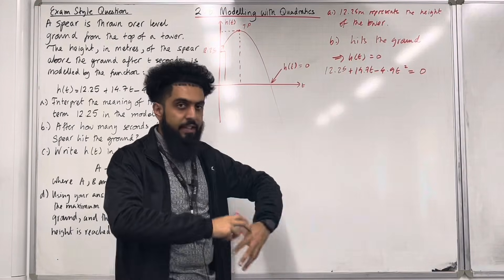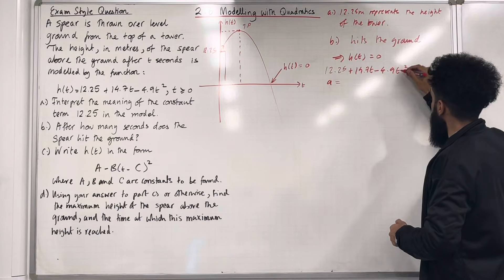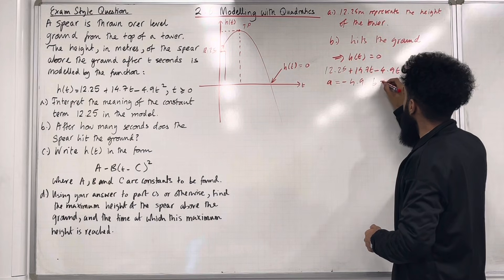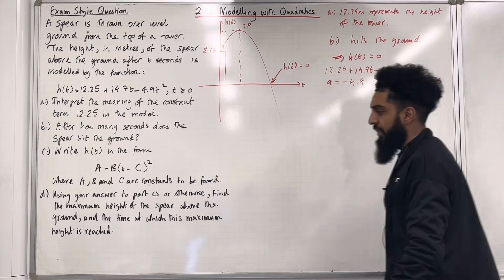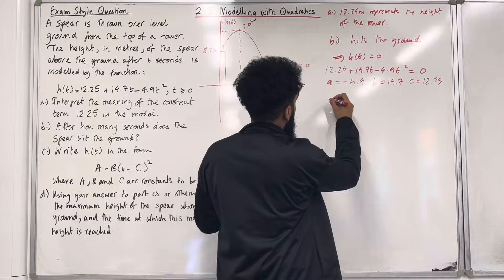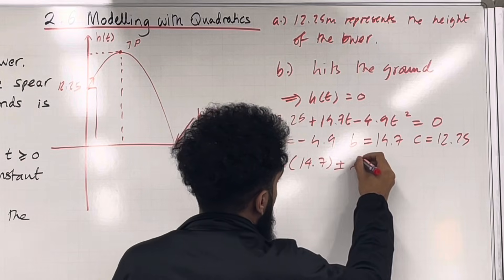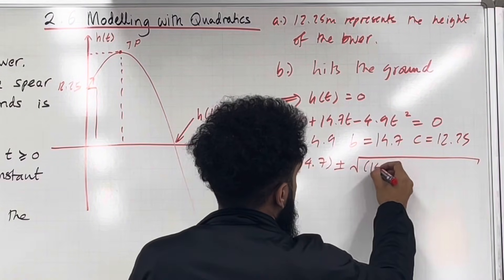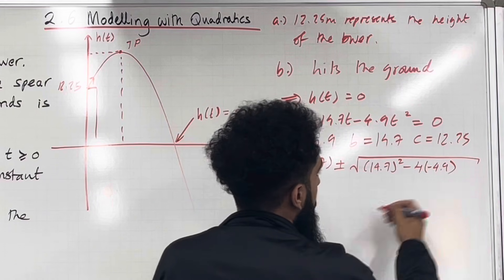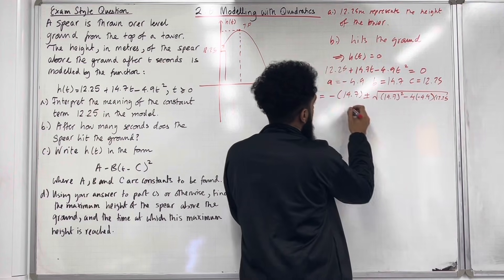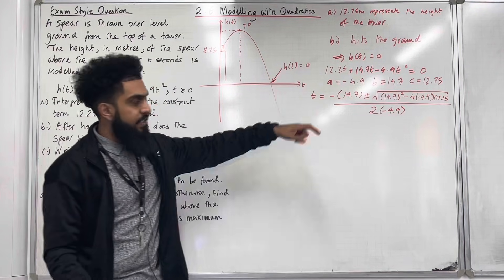Now this particular quadratic function we can solve it using the quadratic formula. So over here my A is the coefficient of t squared which is minus 4.9. My B is the coefficient of t which is 14.7. And my C is the constant term which is 12.25. So I can substitute my A, B and C into the quadratic formula. So the solution t is given by minus B which is 14.7 plus or minus square root B squared so 14.7 squared minus 4 multiplied by A which is minus 4.9 multiplied by C which is 12.25. This whole thing we are going to divide it by 2 lots of A. So 2 lots of minus 4.9.